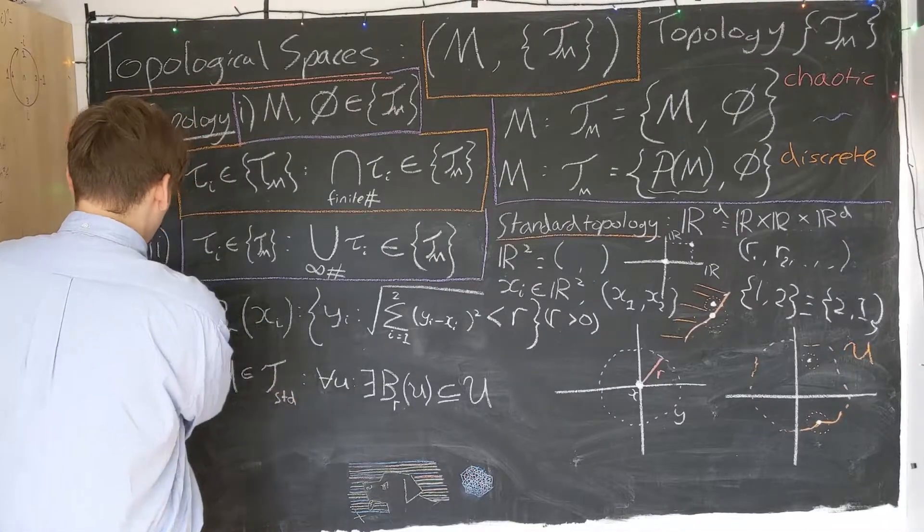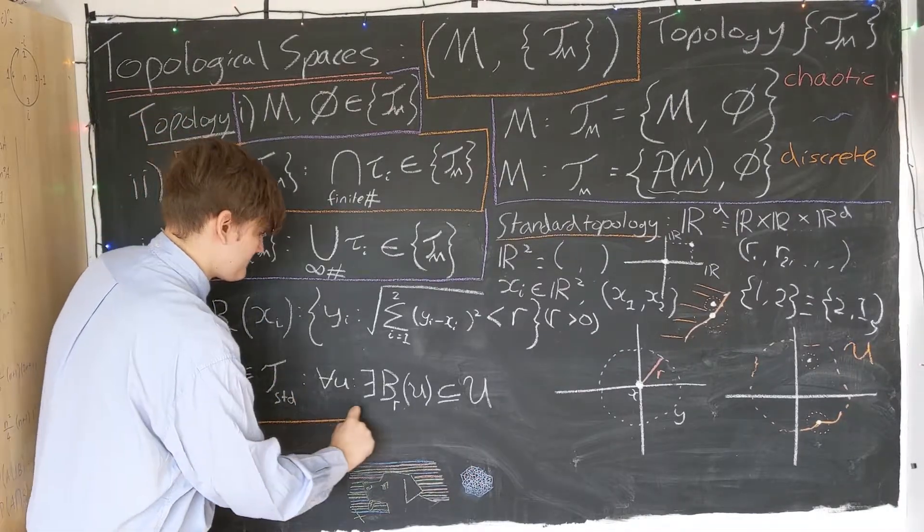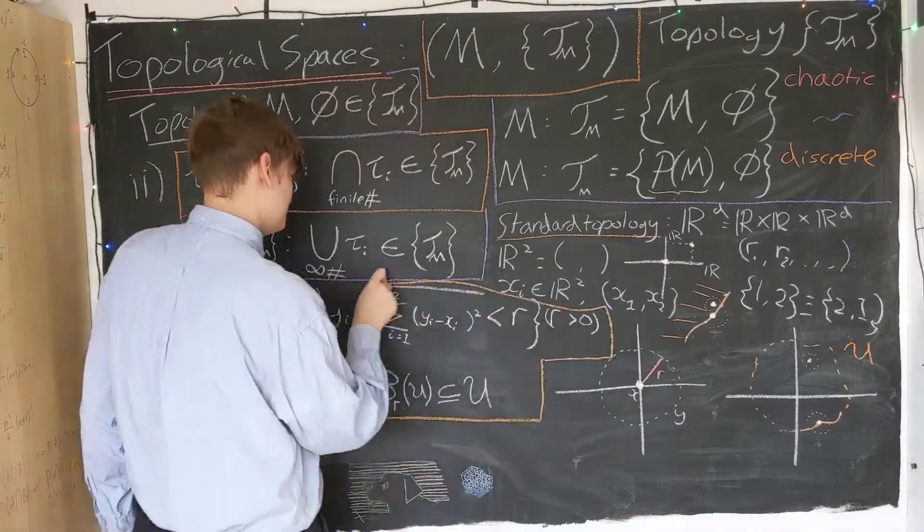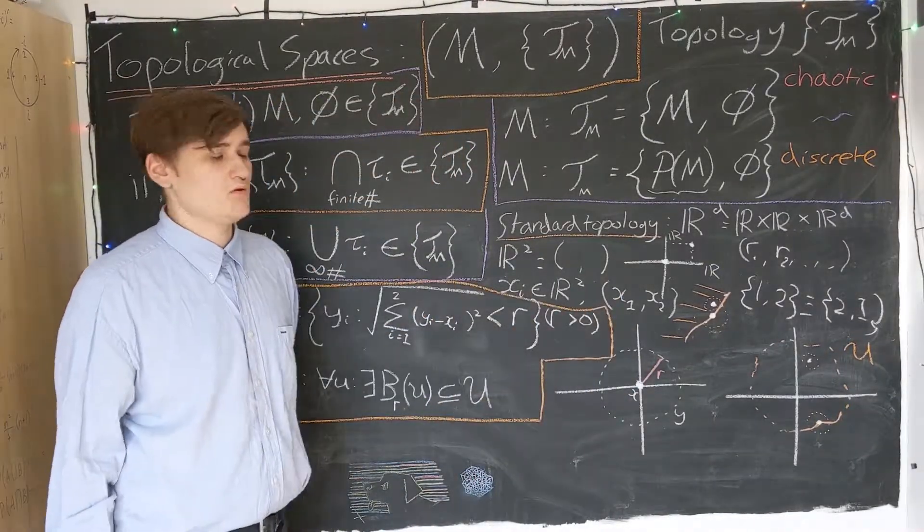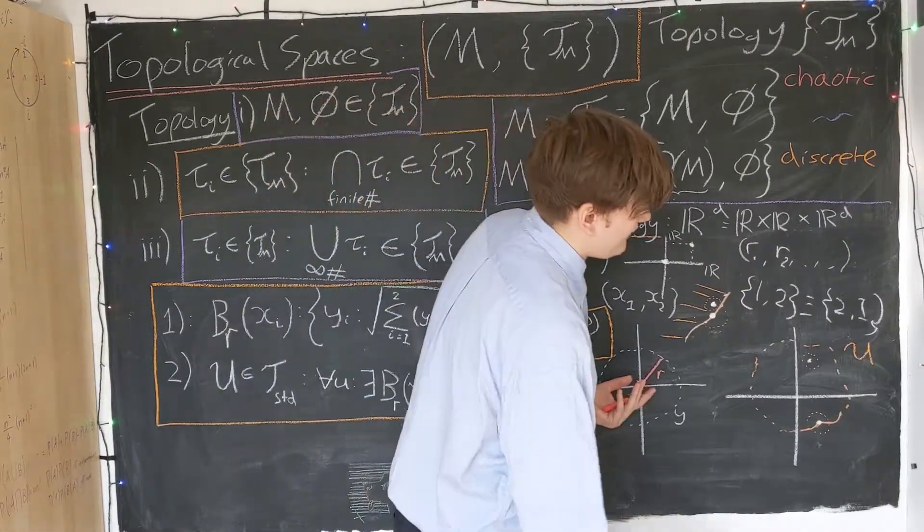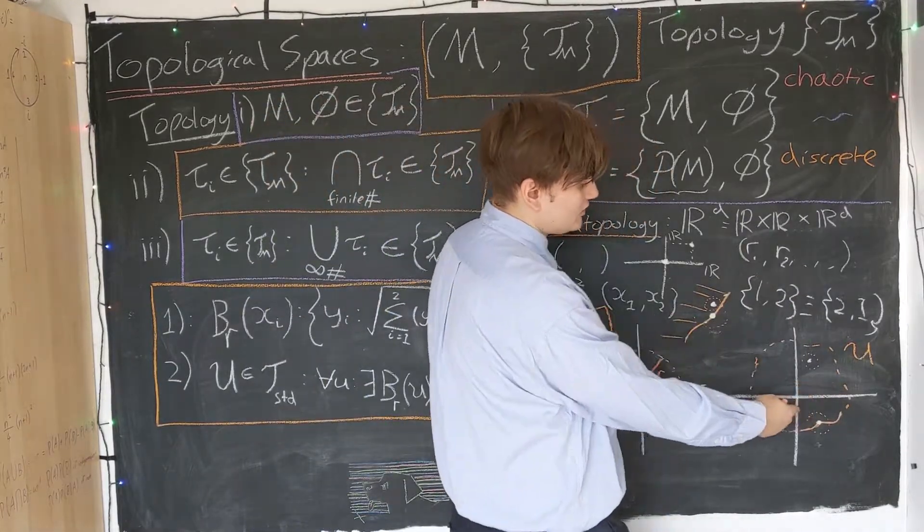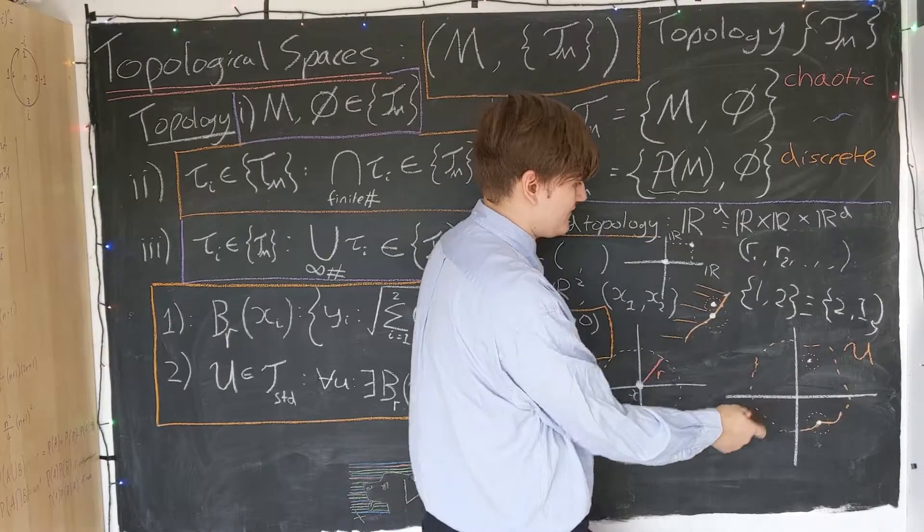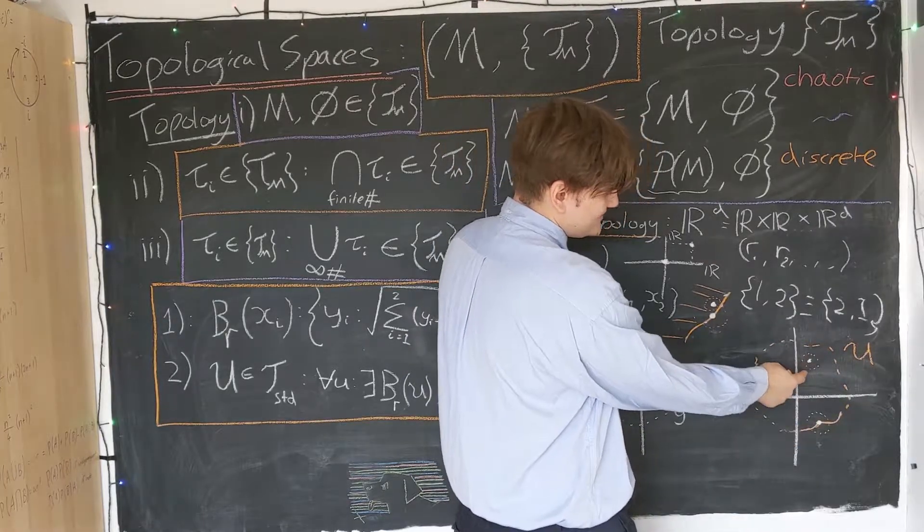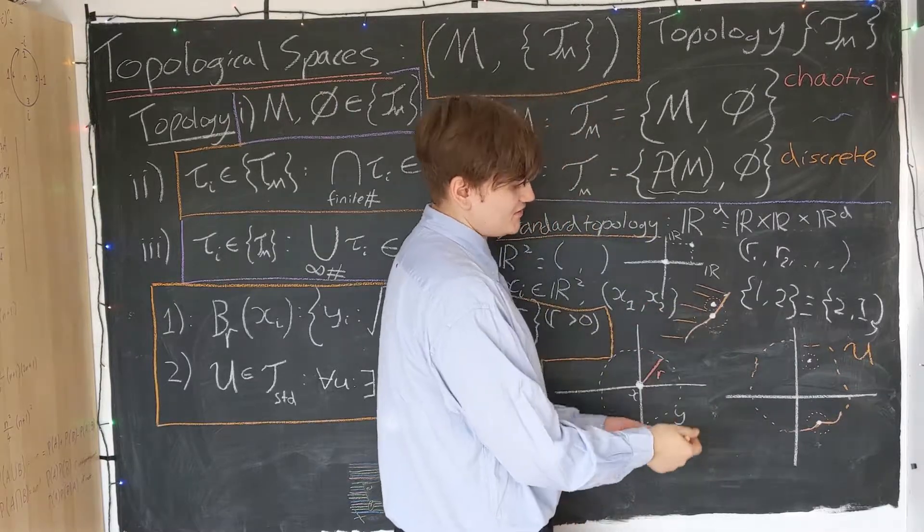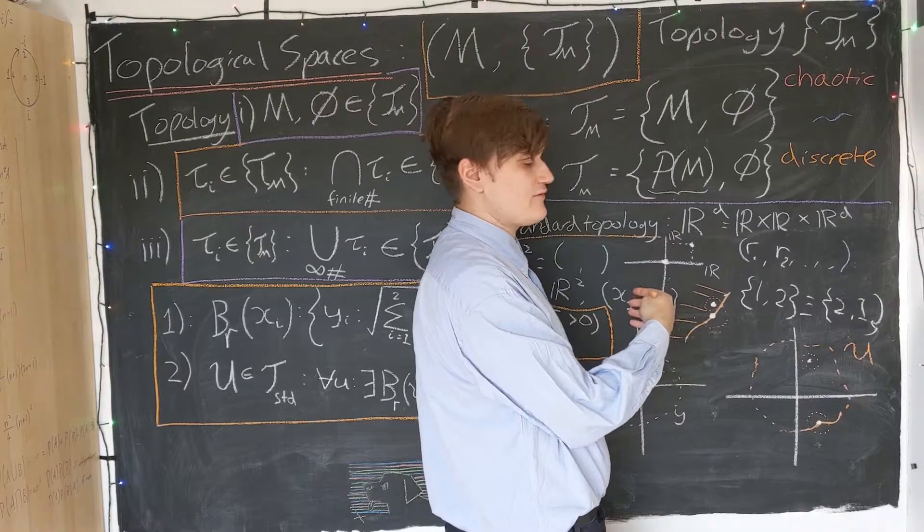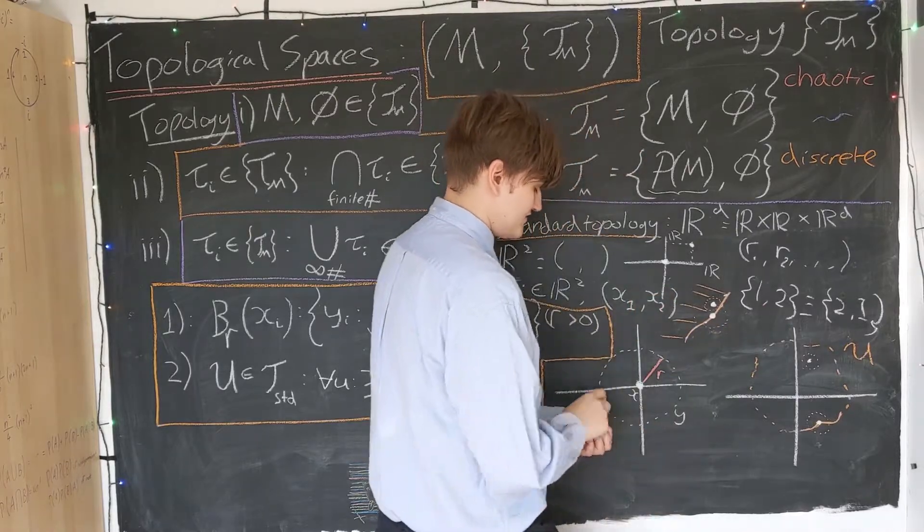So this is how we define the standard topology on R^2 using these open balls. And we can intuitively think of the standard topology now containing every single possible open set that we could create. And it has to be the open sets because of this ball construction. We can't construct a ball on the boundary which is going to lie entirely within the open set.